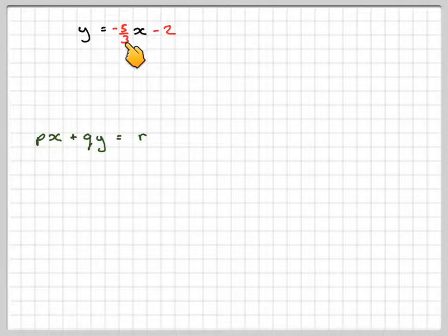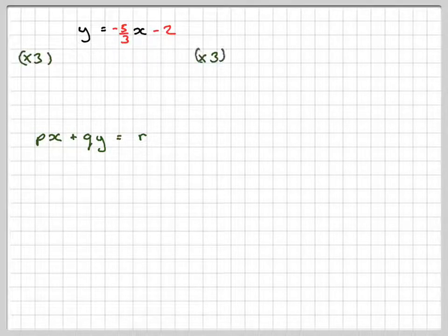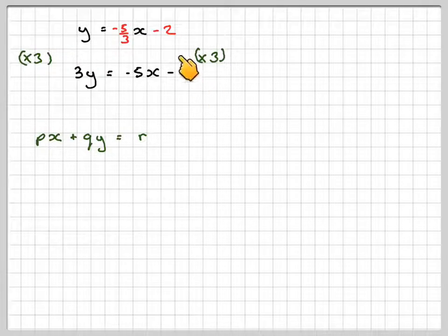We've got to divide by 3. So the first step would be to multiply everything through by 3. If you do that, you get 3Y. If you multiply this by 3, you're just going to get -5X. And then, if you multiply -2 by 3, it's -6. Don't forget to multiply the -2 by 3.